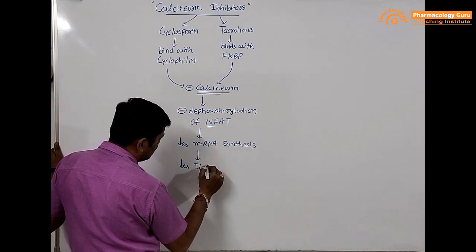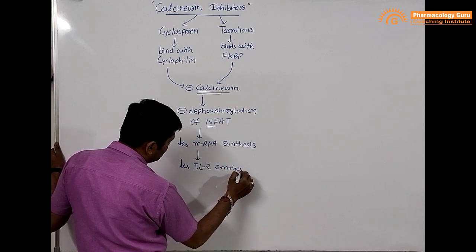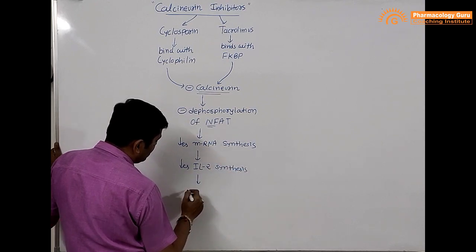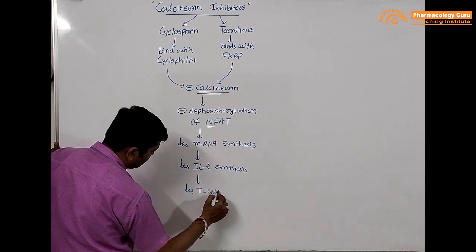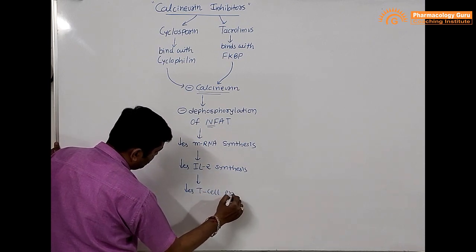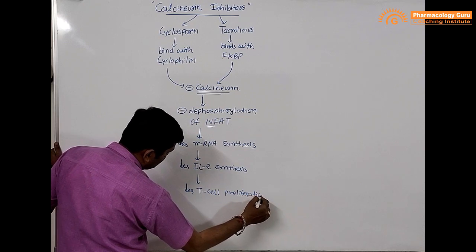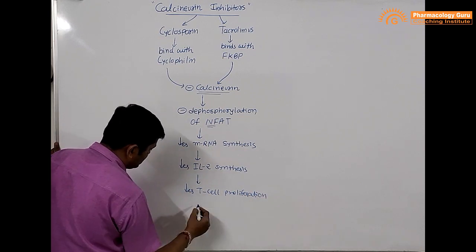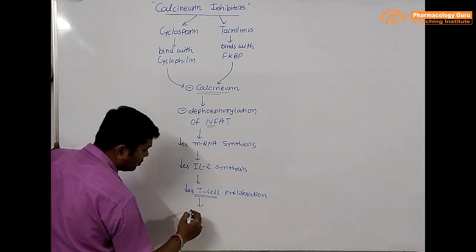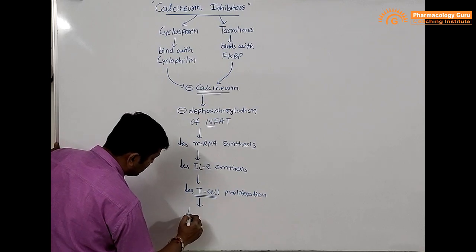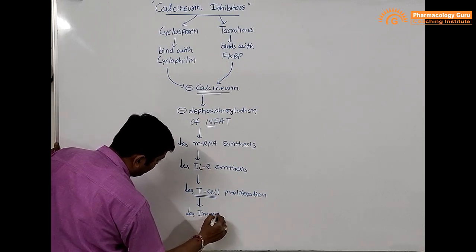The decrease in interleukin-2 mRNA synthesis causes a decrease in interleukin-2 synthesis. Because of that, T cell proliferation is reduced, the number of T cells is reduced, and that causes a decrease in immunity.